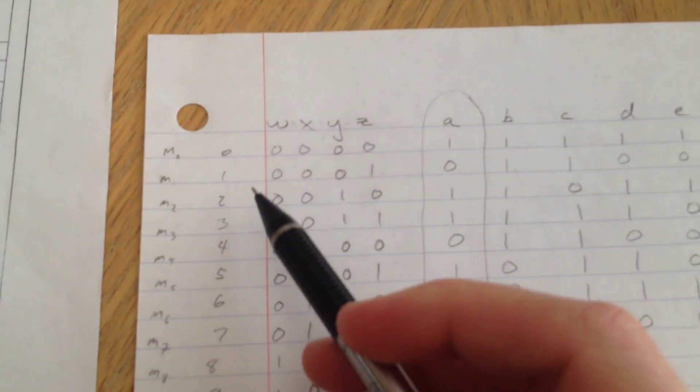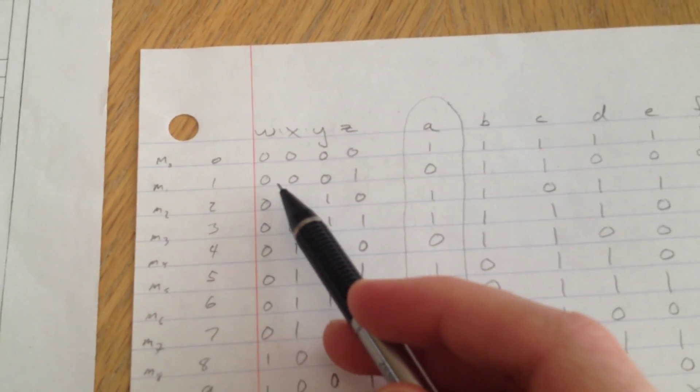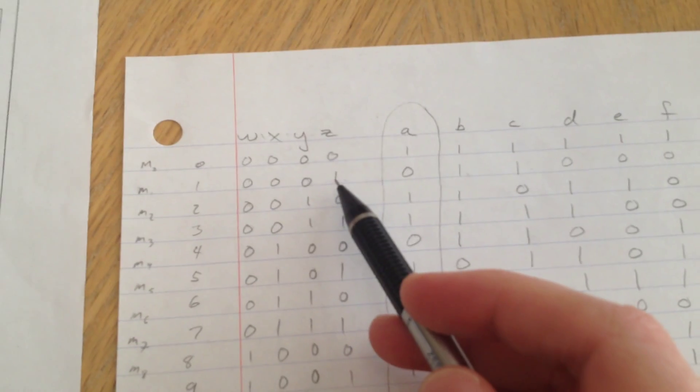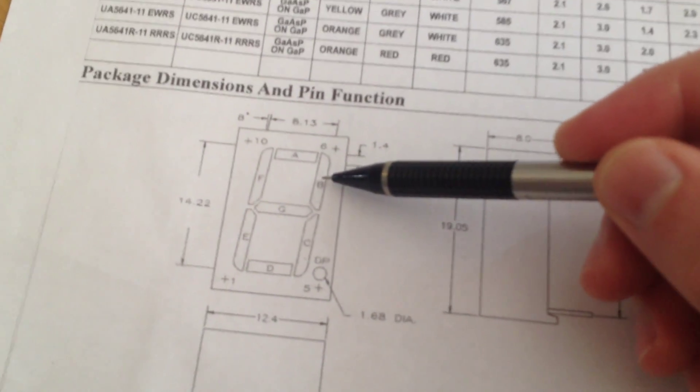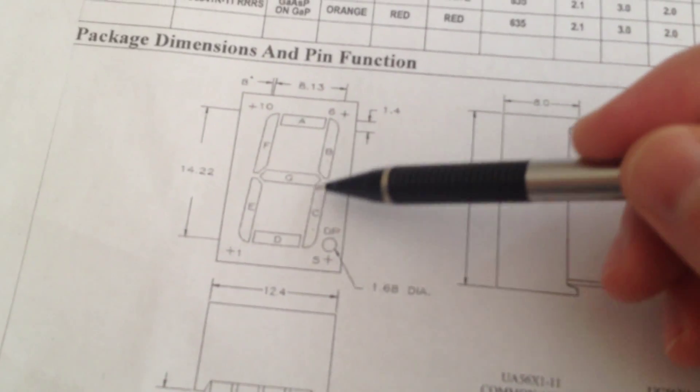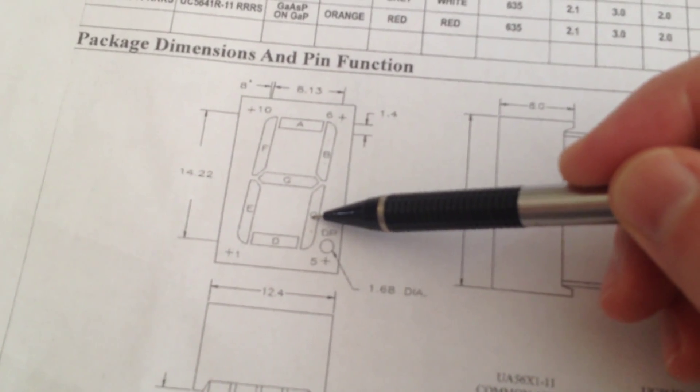Which is going to be the second row here, minterm one. This is binary one. How does it need to look on the seven segment display? Well, segment B, I don't know if you can see that, segment B and segment C need to be illuminated.